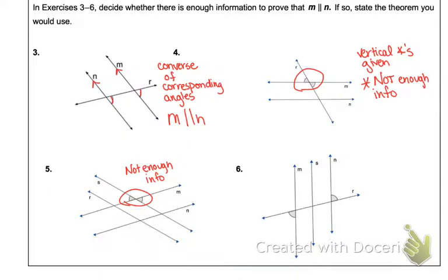And lastly, down on number six, those are the two angles that are given. Notice they're given on line M and line N and how they intersect the transversal. If one of them was marked on S, it wouldn't help us. We're just paying attention to those two lines. And M is parallel to N and our reasoning is converse of alternate exterior angles.